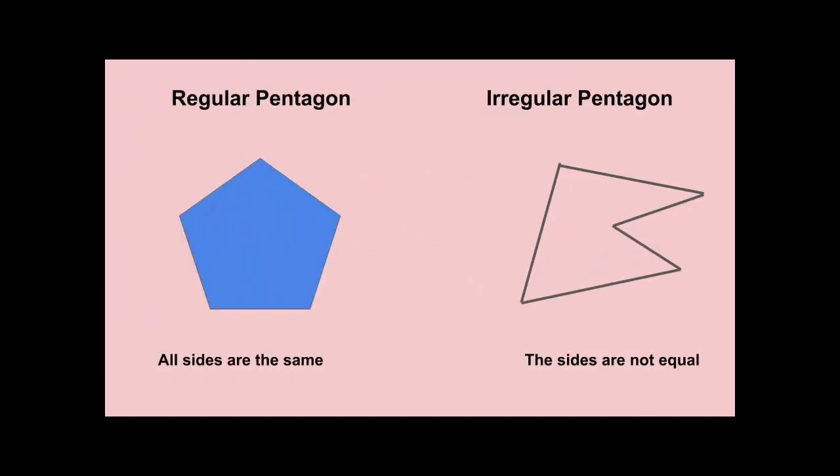Likewise, a pentagon, which is a five-sided figure — if it is a regular pentagon, it has equal sides. Each of the sides is equal. However, an irregular pentagon will have a variety of sides.